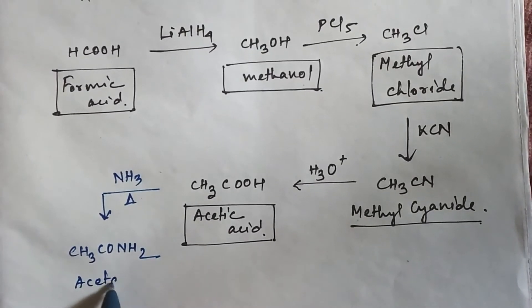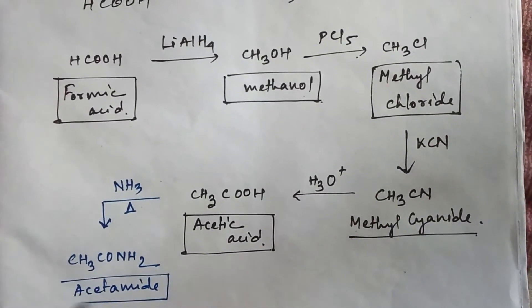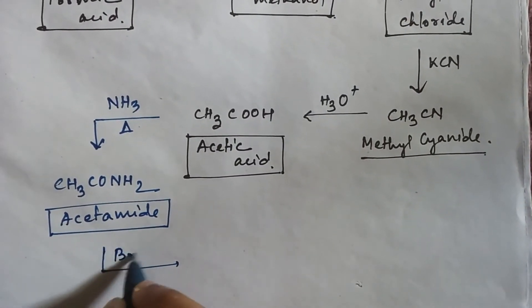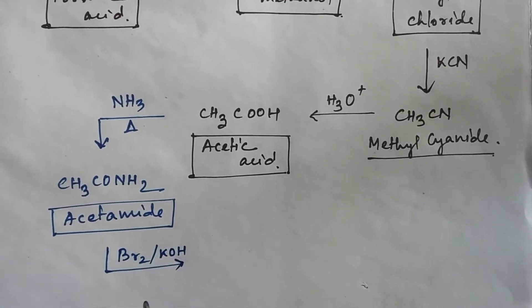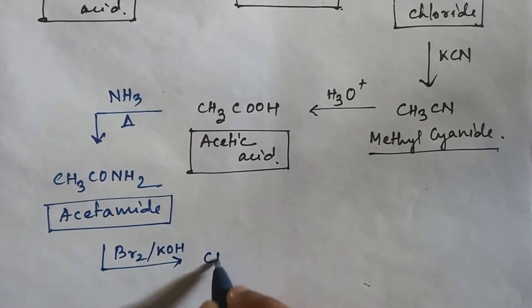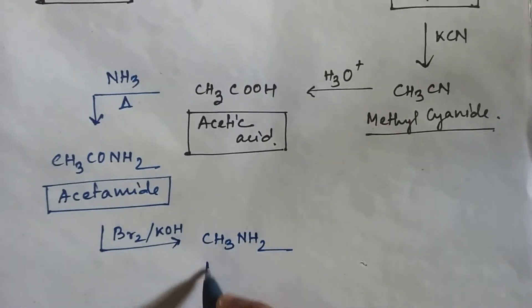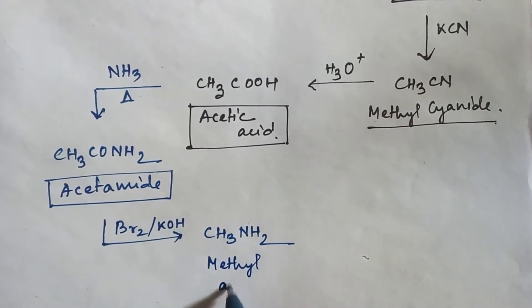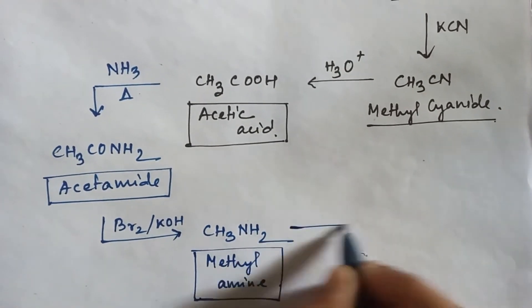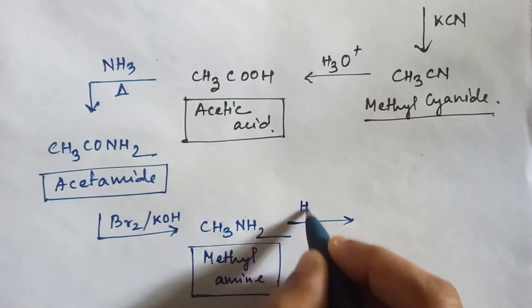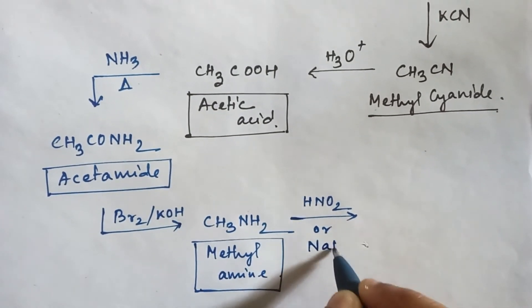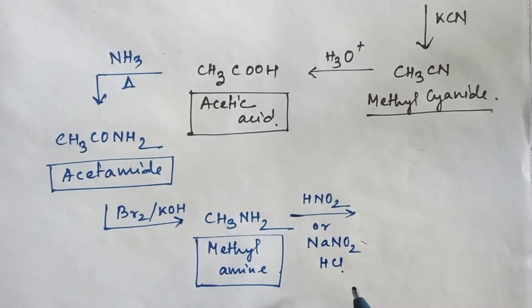Now in acetamide, if you add Br2 and KOH — that is the Hoffmann bromide reaction — then CO will be eliminated and you will get an amine. Here the amine is methylamine. Now in methylamine, if you add nitrous acid, or you can also add sodium nitrite and HCl, because sodium nitrite and HCl react with each other to form nitrous acid.